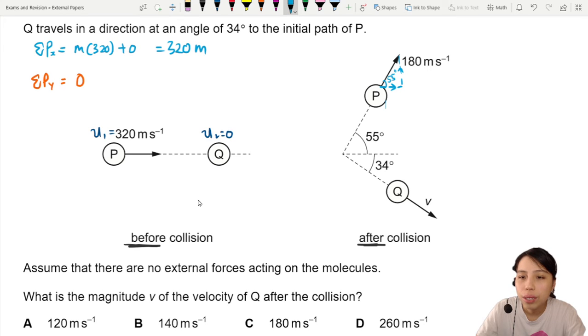Horizontal velocity will be 180, adjacent over hypotenuse, cos 55. And the vertical we'll do later. The other one down here also has a horizontal component. This one will be V.